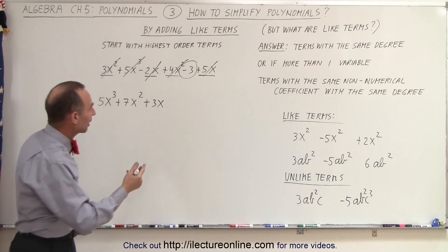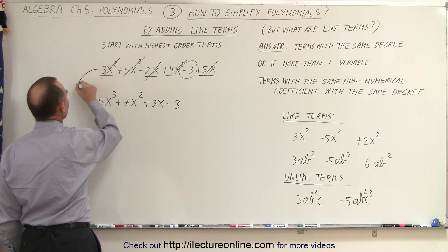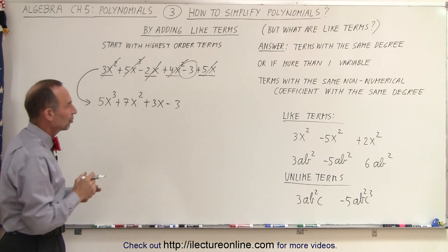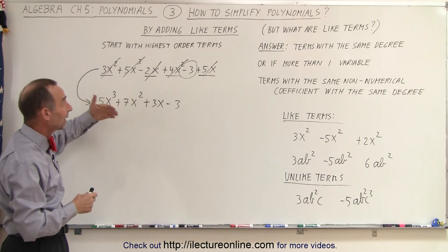To the 0 power, so that I write at the end, -3. And what I've done is I've rewritten the very same polynomial in a simplified form by adding like terms together. And that's exactly what we mean when we're trying to simplify by adding like terms together.